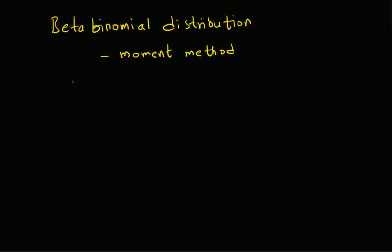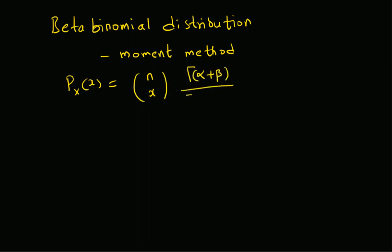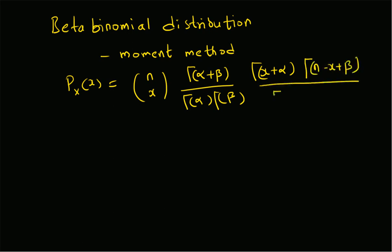The probability mass function of the beta binomial distribution is given by: P(X = x) = nCx times [Gamma(α+β) / (Gamma(α) · Gamma(β))] times Gamma(x+α) · Gamma(n−x+β) divided by Gamma(α+β+n). That is the probability mass function for the beta binomial distribution.